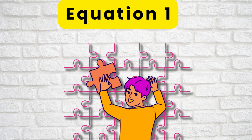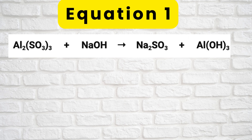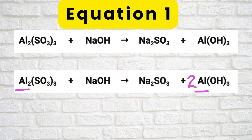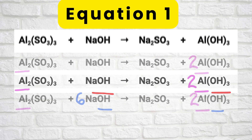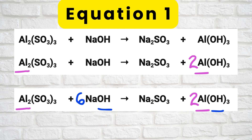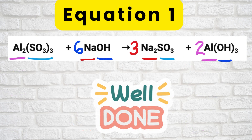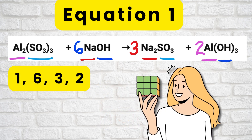Practice equation 1: Al2(SO3)3 plus NaOH gives Na2SO3 plus Al(OH)3. Since aluminum appears only once on either side, let's balance that first by putting a coefficient of 2 in front of Al(OH)3 on the right, making aluminum 2 on both sides. Next, the polyatomic ion OH on the right is 2 times 3 equals 6, so put a coefficient of 6 in front of NaOH on the left, making OH 6 on both sides. Na on the left became 6, so put a coefficient of 3 in front of Na2SO3, making sodium 6 on the right as well. SO3 is 3 on both sides. Everything is balanced; coefficients are 1, 6, 3, 2.